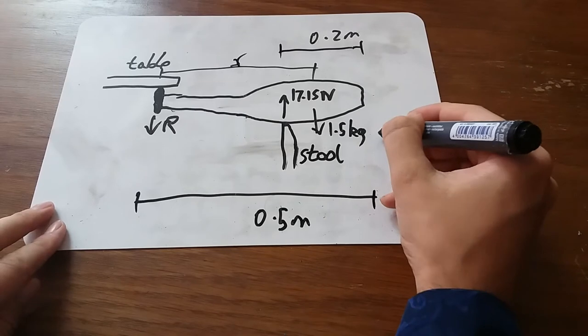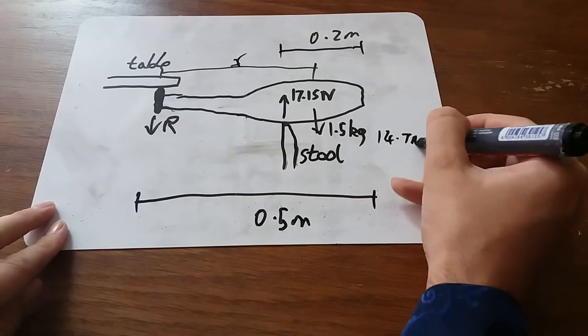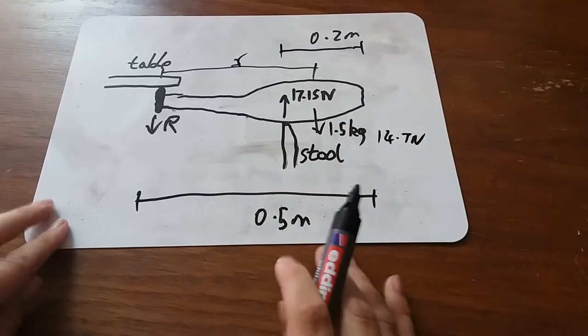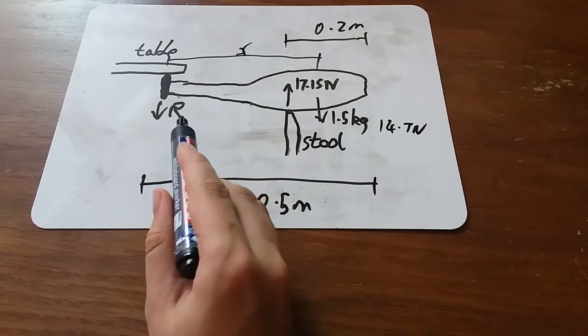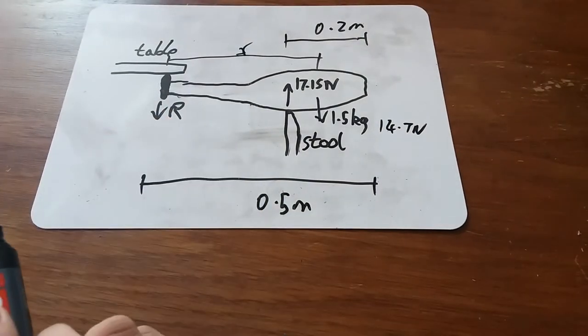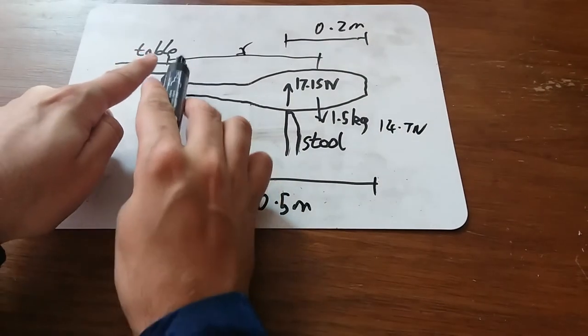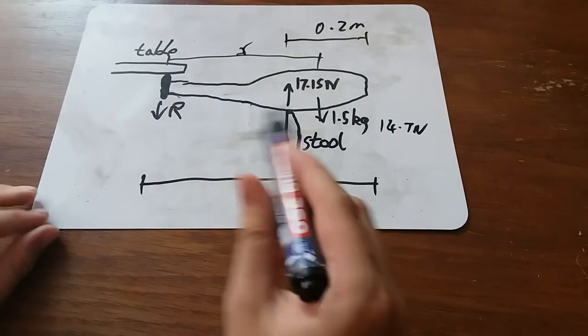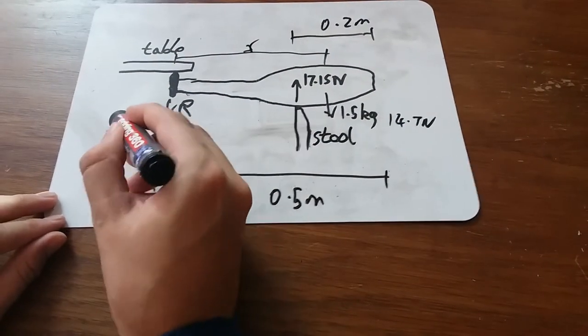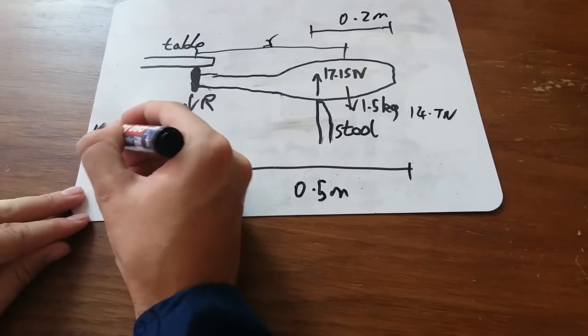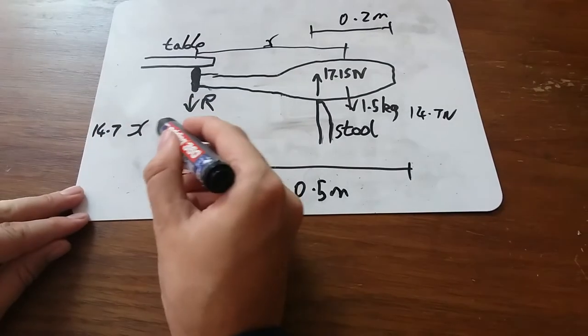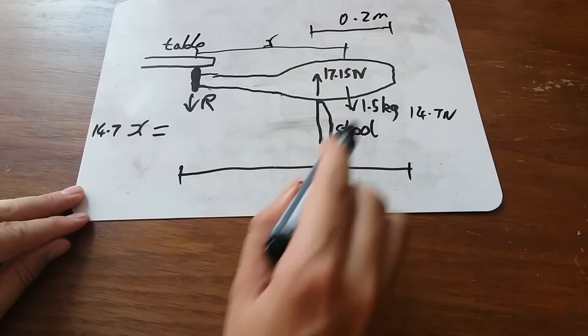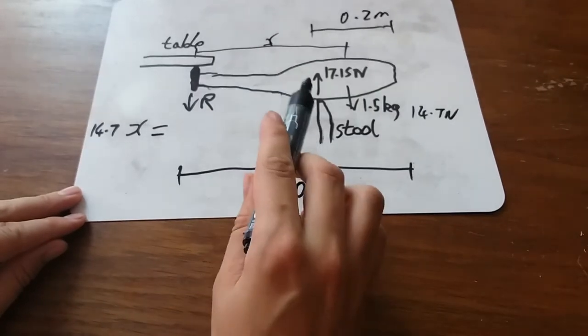So that there is 14.7 newtons going down. Now, I don't know what R is, so I'm going to pivot around this point. This is usually a good tactic. So we've got one force, which is X times 14.7 going one way. So X times 14.7 is 14.7X. And we know that that moment, which is clockwise, must be equal to the total moment going the other way,